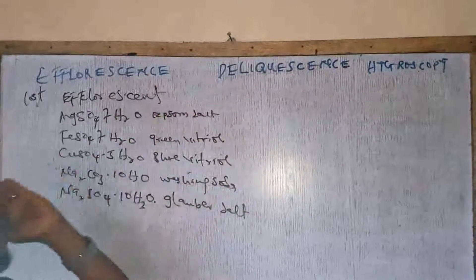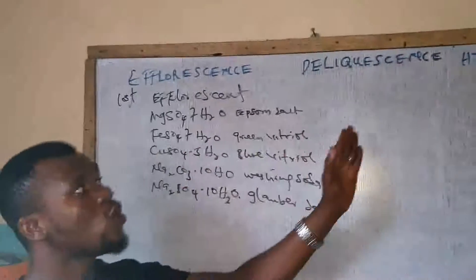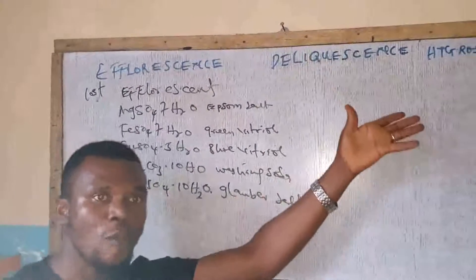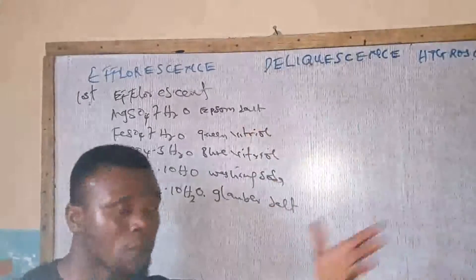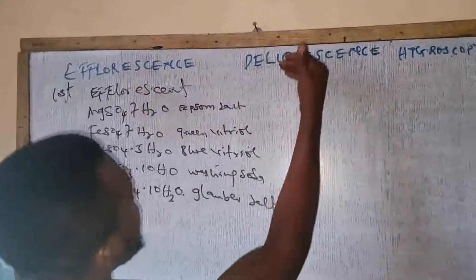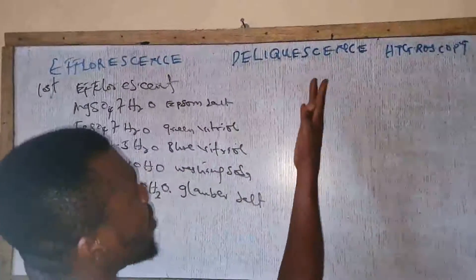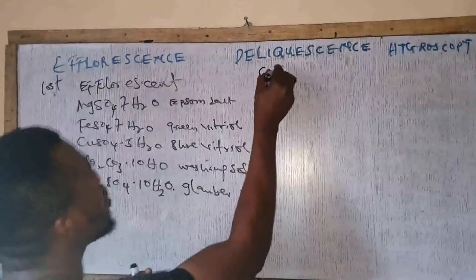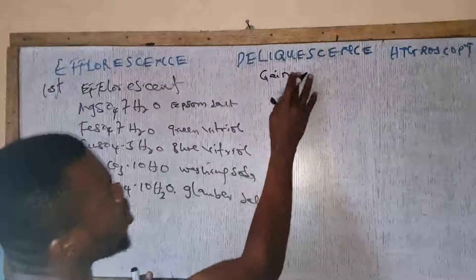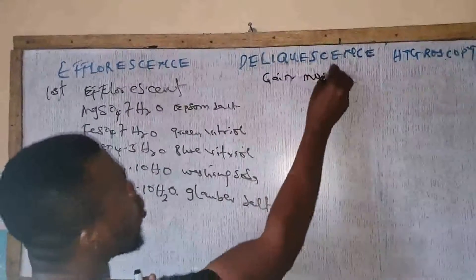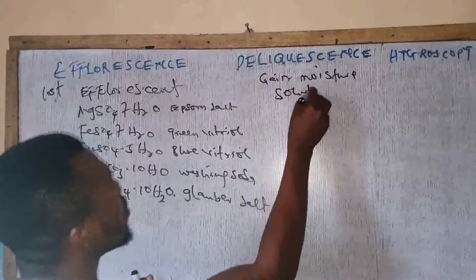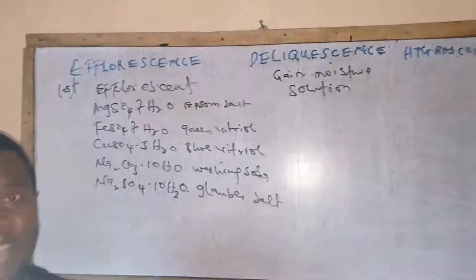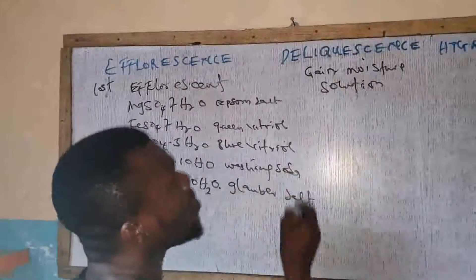Deliquescence is the opposite of efflorescence. A deliquescent salt or substance tends to absorb moisture from the atmosphere to form a solution. When exposed to the atmosphere, deliquescent substances gain moisture and end up forming a solution.